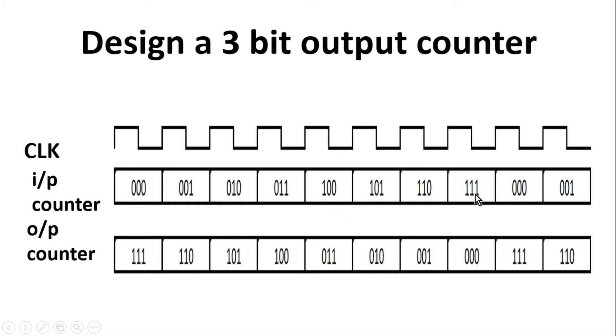It can be a free-running counter or it can be counting any particular event. Now you have to design an output counter. When the input counter is at 000, the output counter is at 111. When the input counter is 001, the output counter is 110, and so on.